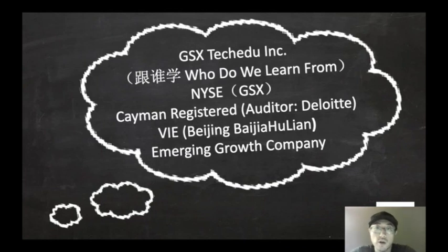Today, I want to talk about this new company called GSX Techedu, Chinese name is 跟谁学, English translation: who do we learn from? It is currently being listed on the New York Stock Exchange. Its ticker number is GSX.